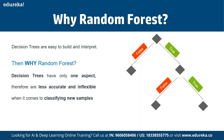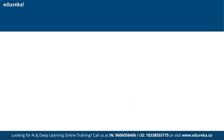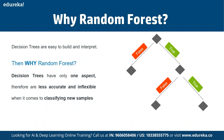Before discussing random forest in depth, we need to understand how decision trees work. Let's say we want to buy a house but are unable to decide which one to buy. We consult a few agents, and they give us a list of parameters to consider: price of the house, locality, number of bedrooms, parking space, and available facilities.